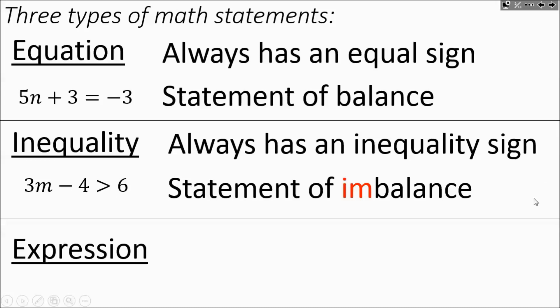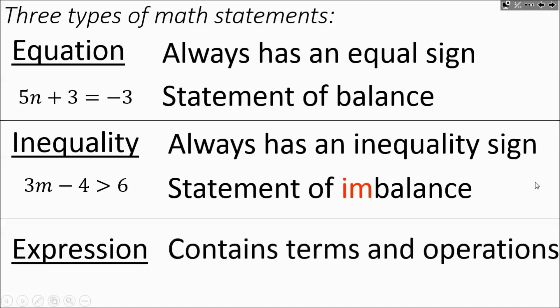Finally, we have expressions. Expressions have terms and operations — some numbers and some operations — but they don't say something is equal to anything, or greater than or less than anything. An example would be 5a plus 3b minus 8. That's an expression.